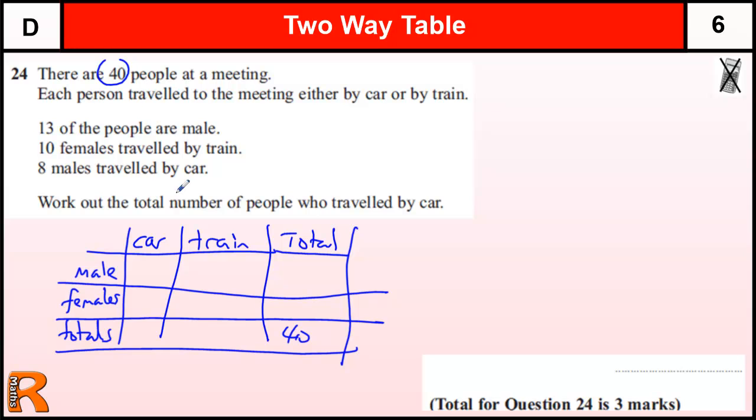Okay, so 13 of the people are male. So this total of the people that are male is 13. So that tells us that there must be 27 females because 27 plus 13 is 40.